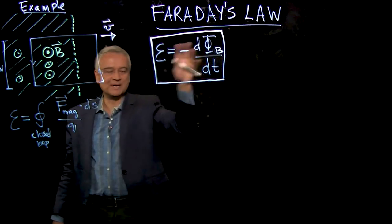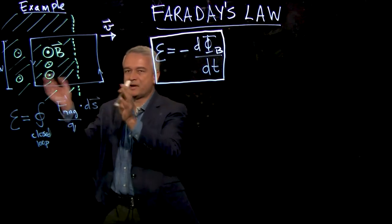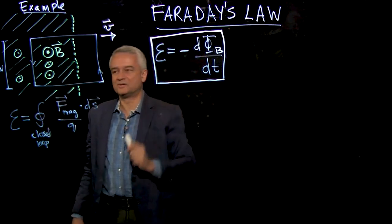The electromotive force around the loop is minus d by dt of the magnetic flux through the loop. No matter how you're making a change in the flux, you'll get an EMF.